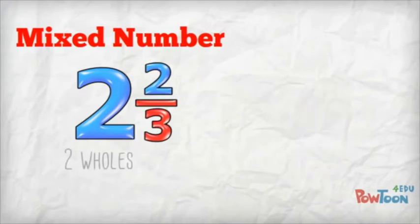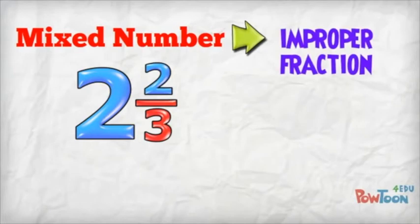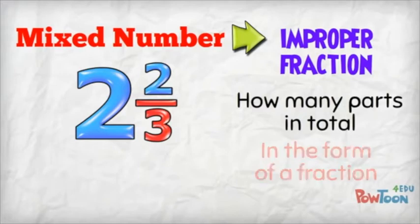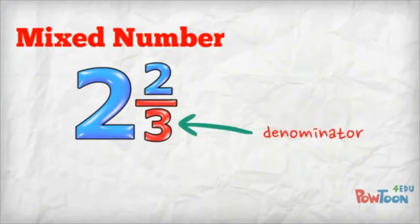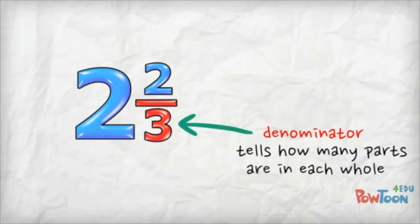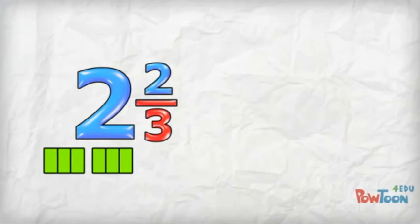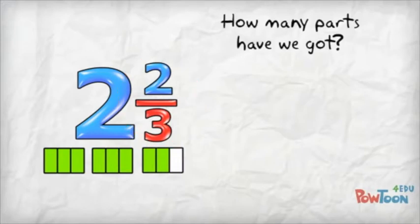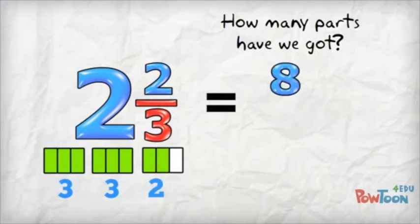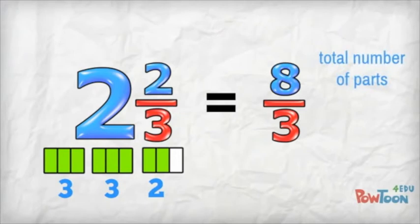Here we've got two and two thirds — that's two whole ones, and the fractional part is two thirds. When we change between a mixed number and an improper fraction, we're saying how many parts there are in total, giving that information in the form of a fraction. The denominator tells us how many parts are in each whole. A denominator of three means that each whole has three parts and we have two wholes. This fractional part tells us we have two parts out of three. We can see all our parts in this diagram: two wholes — that's two lots of three, six — plus two more parts, that's eight. We keep the same denominator, so we put eight over three. And there's your improper fraction.